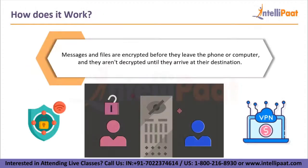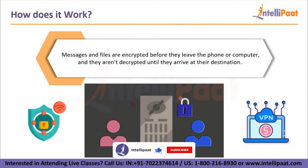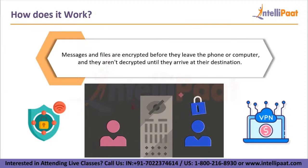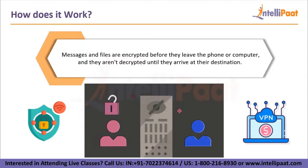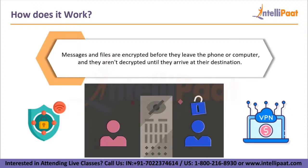Now let's see how does it work. Encryption takes place at the device level in genuine end-to-end encryption. Messages and files are encrypted before they leave the phone or computer, and they are not decrypted until they arrive at their destination. Private keys are saved on the device of each individual user, making it far more difficult to access that person's data. The generation of a public-private key pair ensures the security of end-to-end encryption. This method, also known as asymmetric cryptography, encrypts and decrypts the message using distinct cryptographic keys. Public keys are widely distributed and are used to encrypt or lock messages, while only the owner has access to the private keys, which are needed to unlock or decrypt the message.